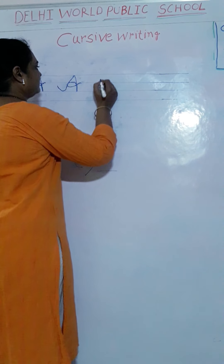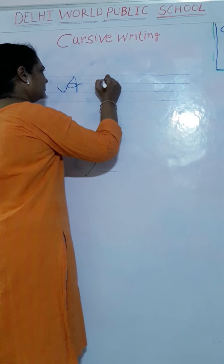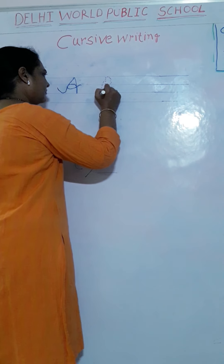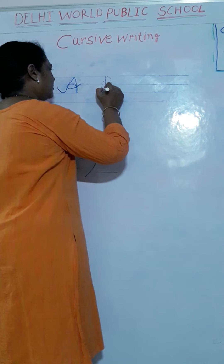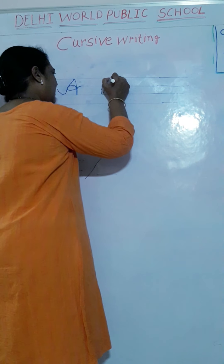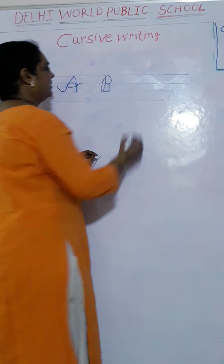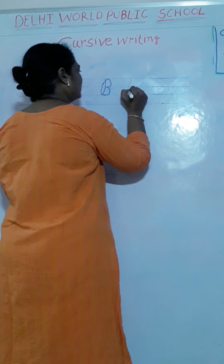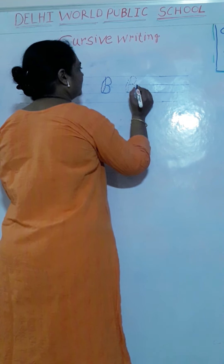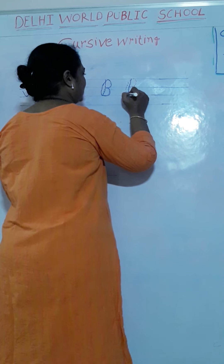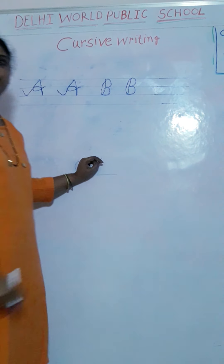Now B. Dotted line. Now join it. Down to the mountain, then up, then make a curve, another curve — that is B. Again: down, then up, then up, make a curve, and another curve. That is B. Okay?